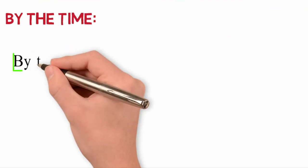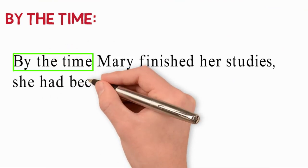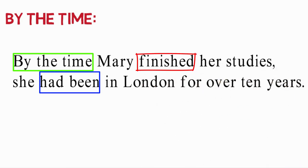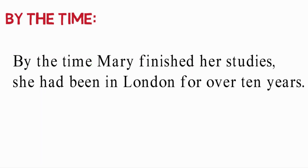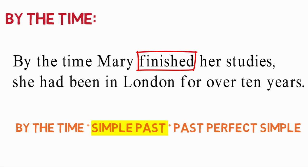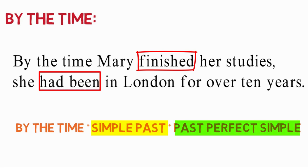Another adverb of time is 'by the time'. For example: 'By the time Mary finished her study, she had been in London for over ten years.' The first verb that comes after 'by the time' is conjugated into the simple past, and the second one is conjugated into the past perfect simple.